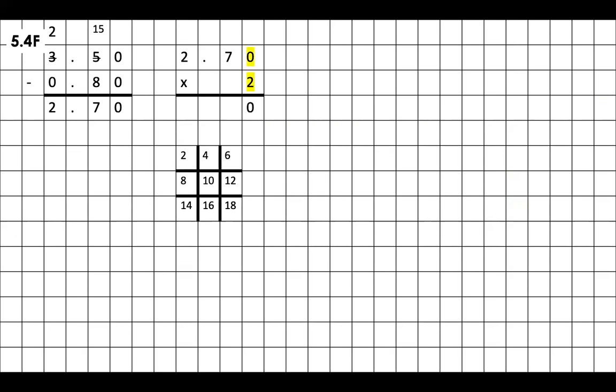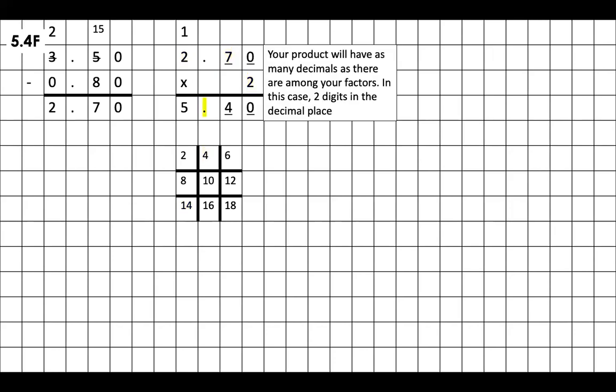Two groups of zero, nothing, zero. Two groups of seven is 14. As you can see, it's highlighted there in the tic-tac-toe. And then two groups of two is equal to four plus the one that I regrouped on the 14 is equal to five.